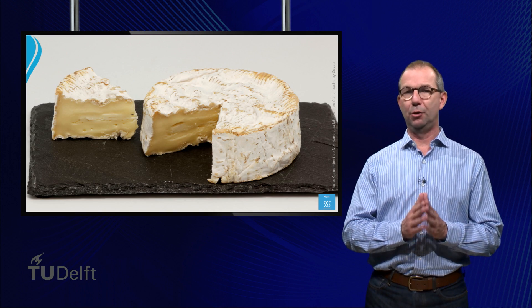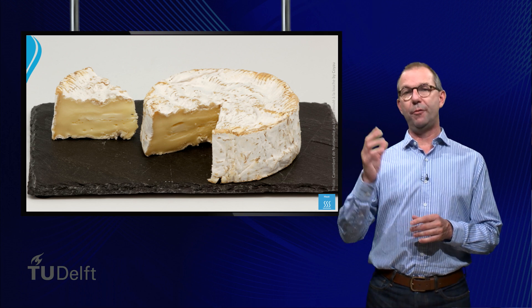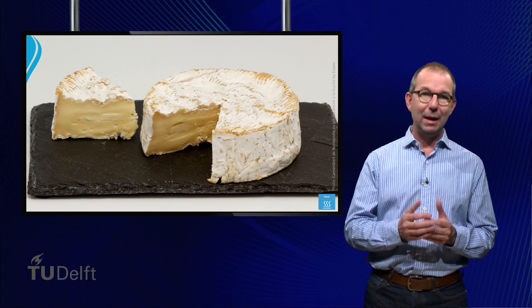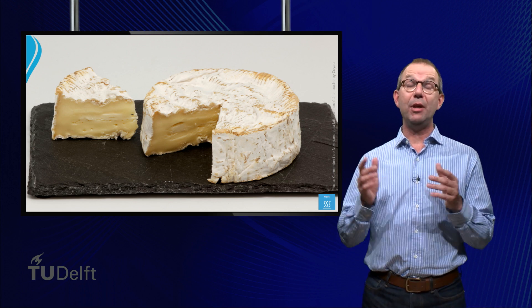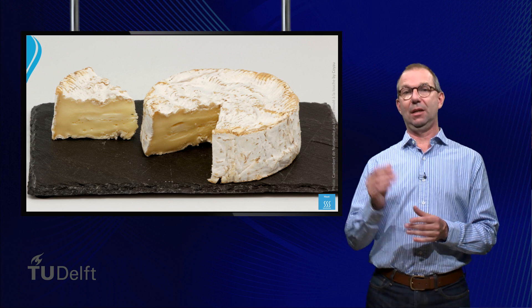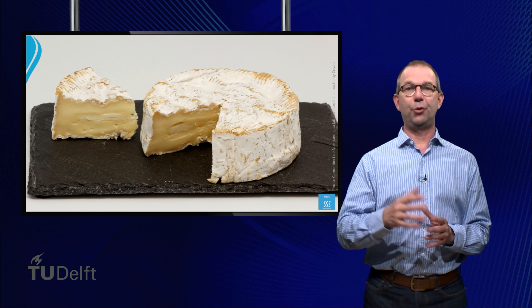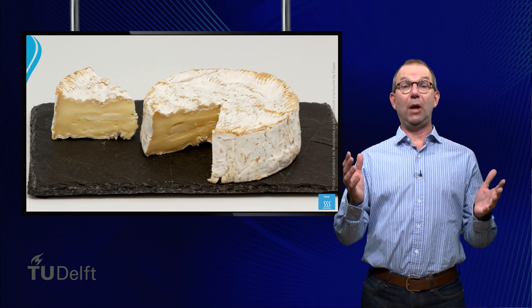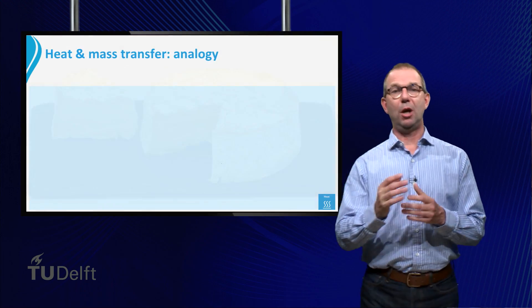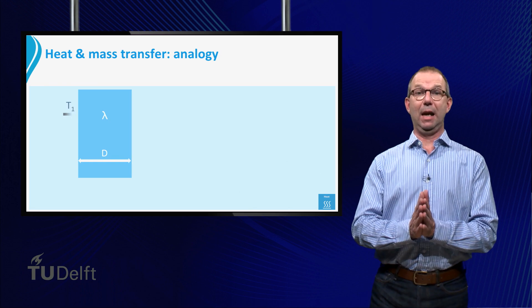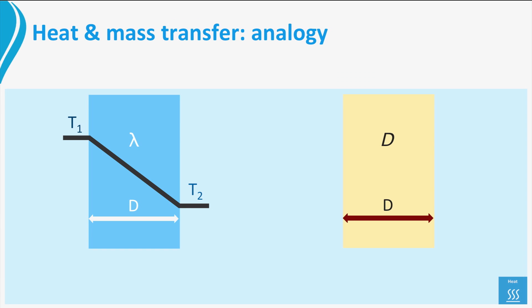Mass transfer can be pretty annoying. Take for example this piece of lovely French cheese. If you wrap it in a bag and put it in your fridge, the next day everything in your fridge will smell like it. Mass transfer can go through bags, even though we might think they are airtight. If we use our analogy to diffusion through a stagnant layer, we can copy the entire analysis from the steady state heat conduction through a flat plate.